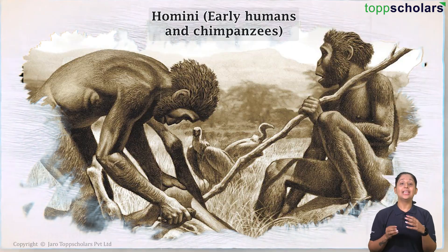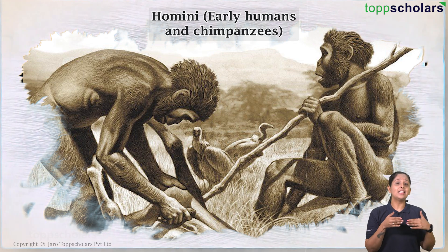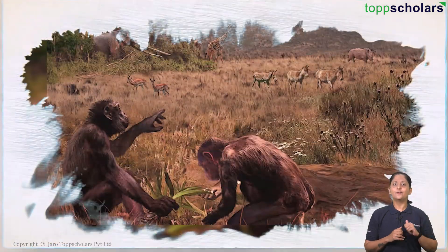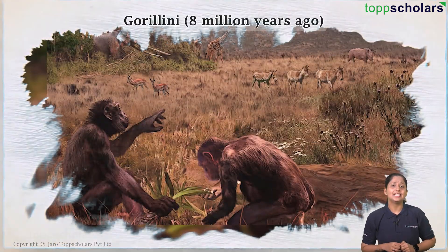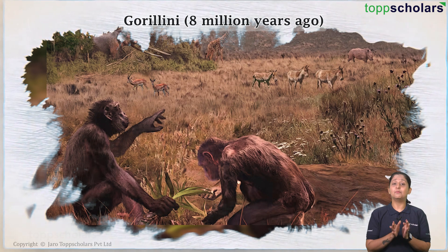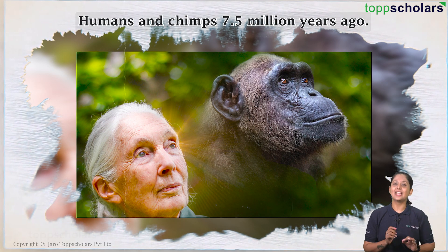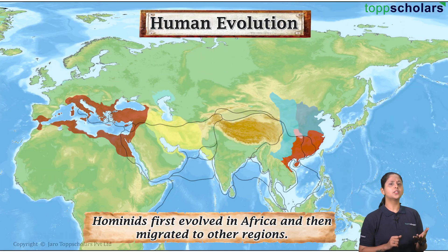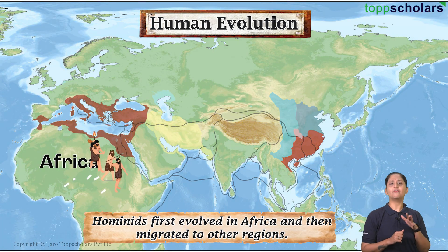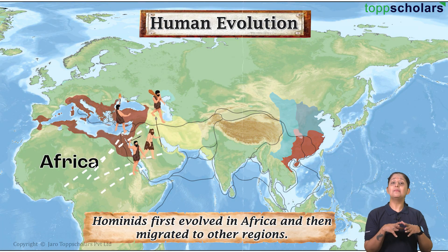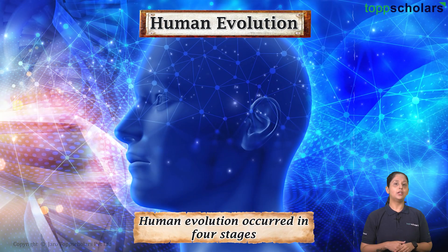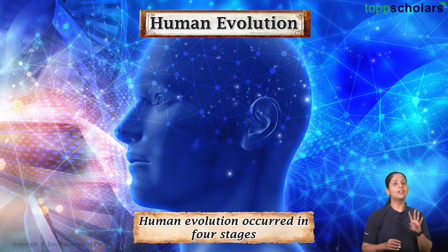Divergence among apes, gibbons, and orangutans occurred, with hominids including early humans and chimpanzees separating from gorillini around 8 million years ago, and humans and chimps separating 7.5 million years ago. Hominids first evolved in Africa and then migrated to other regions.